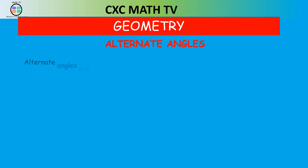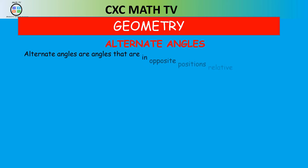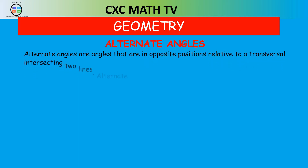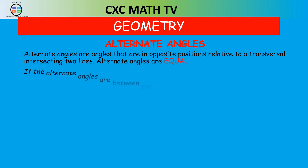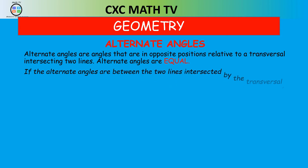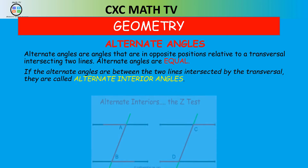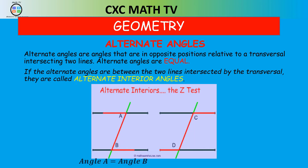The next law is alternate angles. These are angles in opposite positions relative to a transversal intersecting two lines, and alternate angles are equal. Many people call these Z-angles. Notice in the picture: we have two parallel lines, a transversal line, and when you draw your Z with the parallel lines and the transversal, angle A equals angle B and angle C equals angle D.